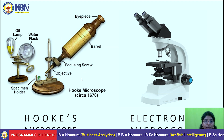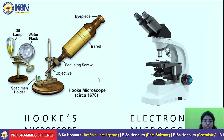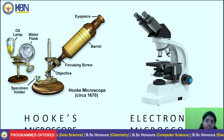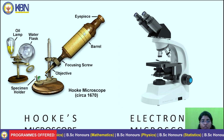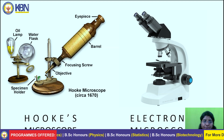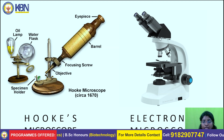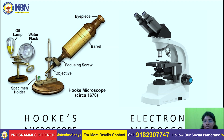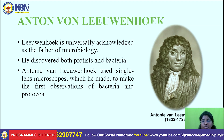Now we are also using this type of electron microscope. Hooke's microscope was invented in 1670. This is the specimen holder, this is the object base, this helps to focus — this is the focusing screw which helps to adjust focus on the microorganism. This is the barrel, this is the eyepiece, this is the oil lamp, and the water flask. Now we are using this electron microscope.